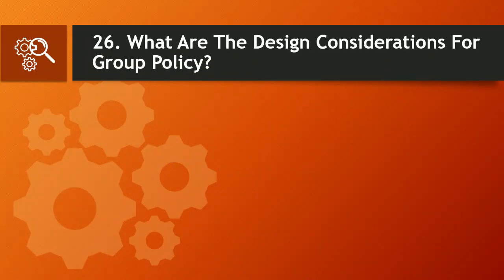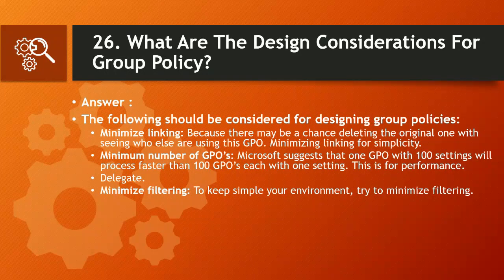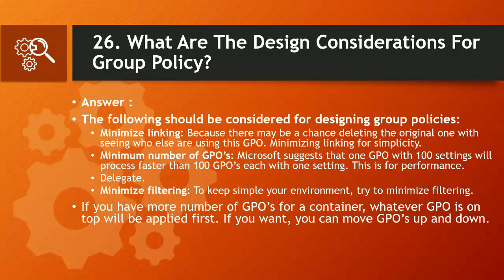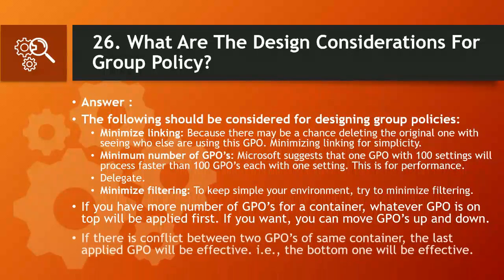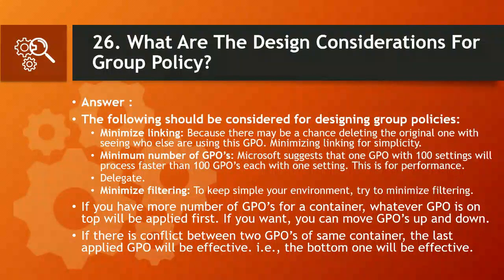Question 26: What are the design considerations for group policy? Answer: Minimize linking, because there may be a chance of deleting the original GPO without seeing who else is using it. Minimize linking for simplicity and maintain a minimum number of GPOs — Microsoft suggests that one GPO with 100 settings will process faster than 100 GPOs each with one setting. Delegate and minimize filtering to keep the environment simple. If you have more GPOs for a container, whichever GPO is on top will be applied first — you can move GPOs up and down. If there is a conflict between two GPOs on the same container, the last applied (bottom) GPO will be effective.